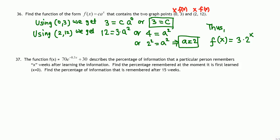The exponential function is f(x) = 3·2ˣ. Do not multiply 3 times 2 to get 6 — it stays as 3 times 2 raised to x.